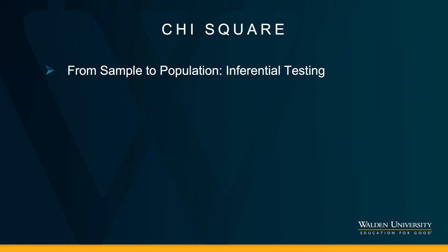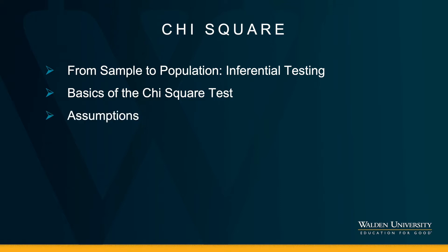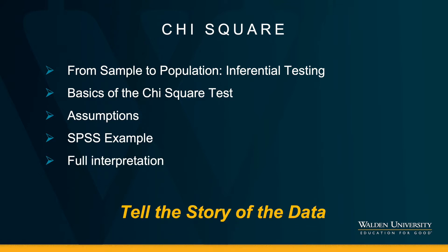We are working with a limited sample data set to answer a research question about the greater population. I will address the basics of the Chi-Square test including how this non-parametric test compares to the other parametric tests that we have addressed in this video series. I will explain the two assumptions of this test, offer an SPSS example that I will fully interpret, and tell the full story of the data. Now let's get started!